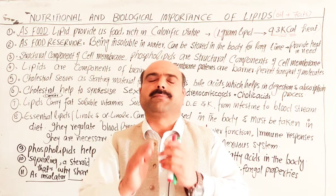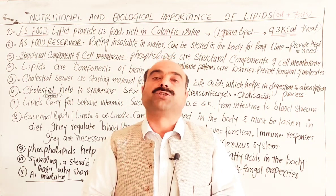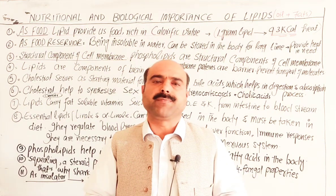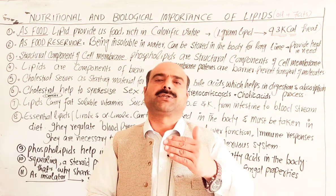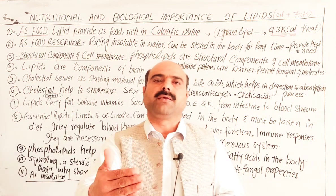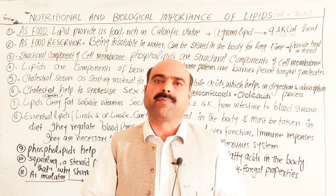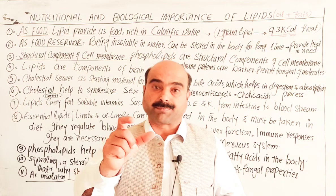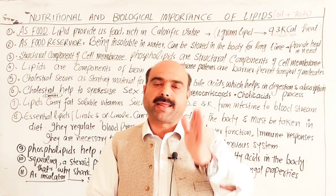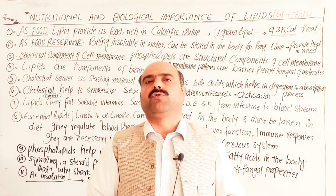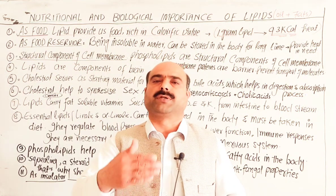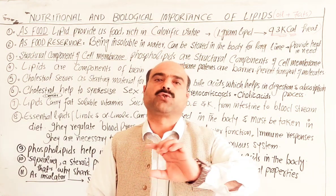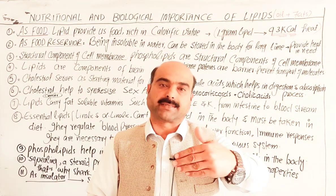The body also maintains a temperature of 37 degrees. If there is extra food, the body stores it. During a starvation period, when food is not available for a long time, the body first uses carbohydrates stored as glycogen in the liver. That glycogen is broken down and converted to glucose, which is then oxidized to release energy.